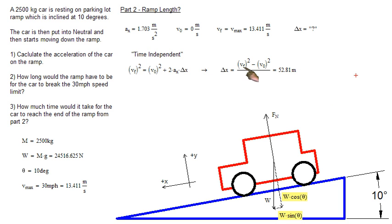And rewriting the equation so that we can solve for it, we get delta x equals vf squared minus v naught squared divided by 2ax. Plugging and chugging known values, we get that delta x equals 52.81 meters. So that's part two. That's how long the ramp would have to be. So when the car reaches 30 miles an hour, it's gone 52.8 meters.